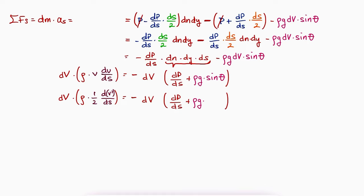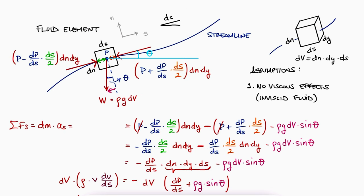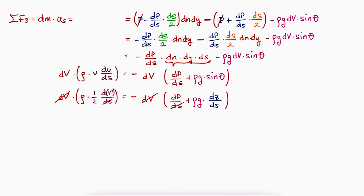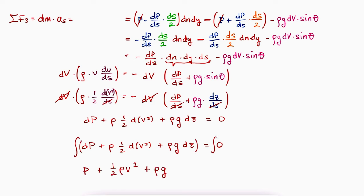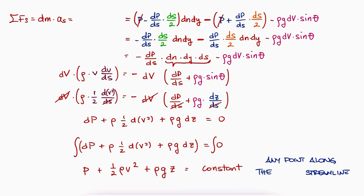On the right-hand side, we can write sine of theta as dz/ds — that's the definition of sine: opposite dz over hypotenuse ds. With all of this, and canceling all the ds terms in the denominators, we can write the expression we were looking for. Integrating, we see that p plus one half of rho v squared plus rho g z must be a constant. If it is a constant, then adding these three terms for any fluid element along the streamline gives the same value regardless of its location — along the same streamline.